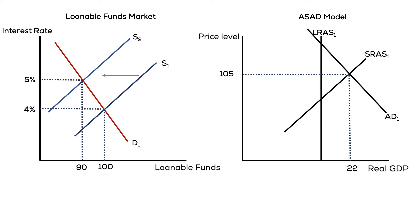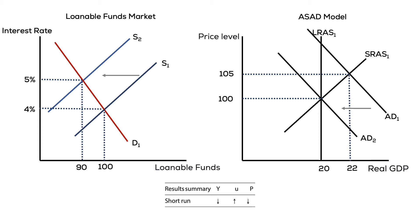Interest rates will increase. The quantity of investment will decrease due to the higher cost of capital. Consumption will fall because the opportunity cost of consuming will increase. Both of these changes will cause the AD curve to shift to the left. The economy once again returns to equilibrium, price levels fall, and unemployment increases.